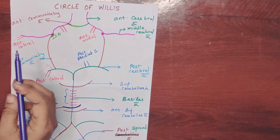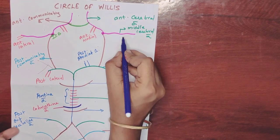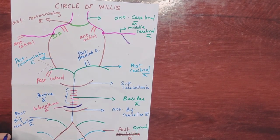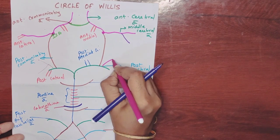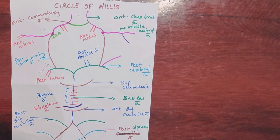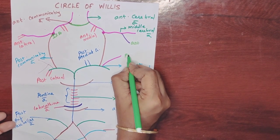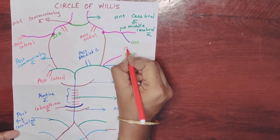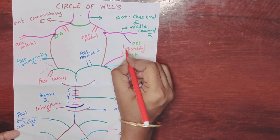There are also two choroidal arteries: one is called the anterior choroidal artery and one is the posterior choroidal artery. The anterior choroidal artery arises from the internal carotid artery, and the posterior choroidal artery arises from the posterior cerebral artery. Both supply the choroid plexus.